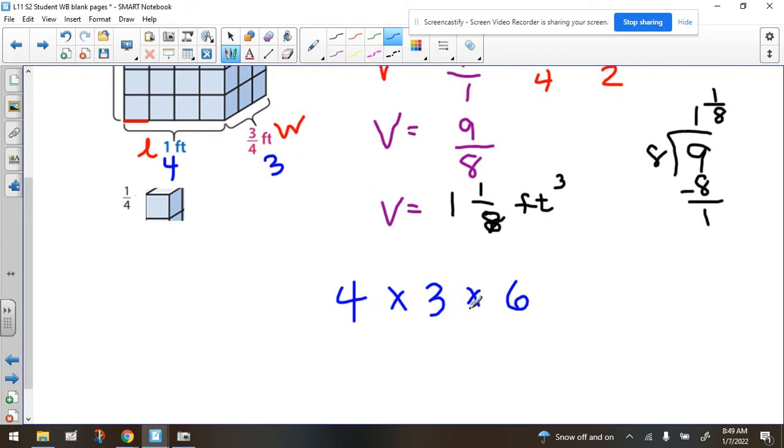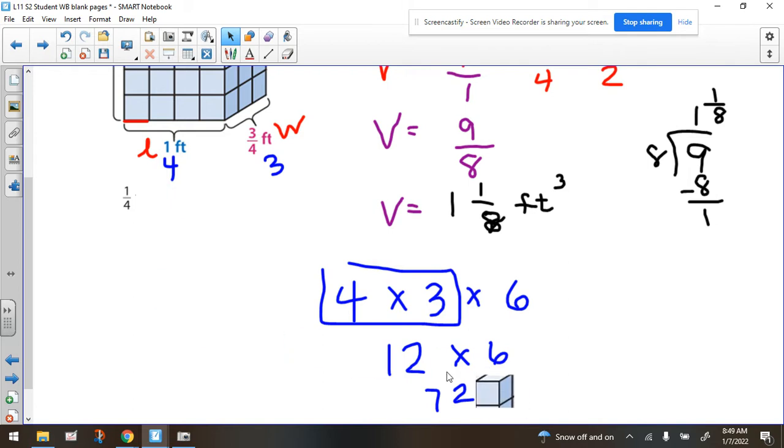So if we were to find how many cubes we're talking about here, we would do four times three, which would be 12, multiply it by the six, and get 72. But that's 72 of these. It's 72 of the quarter inch cubes.